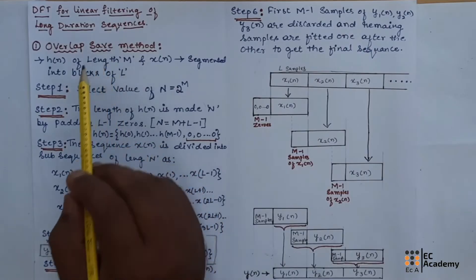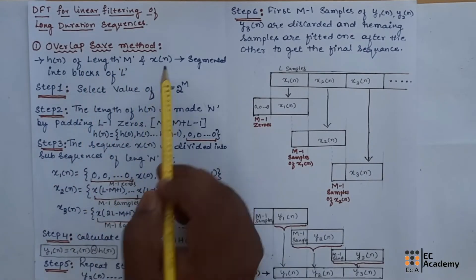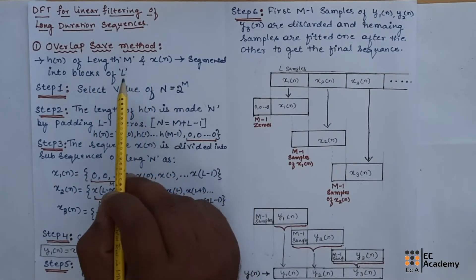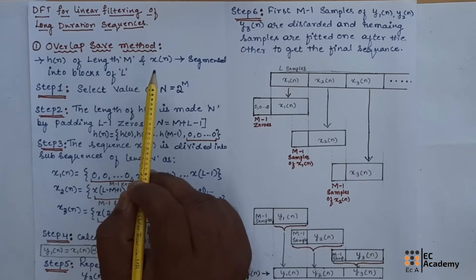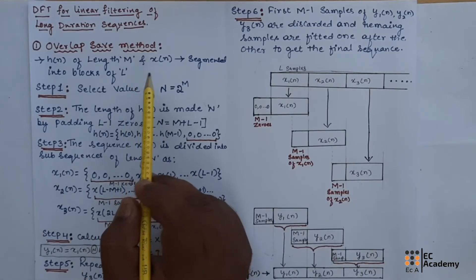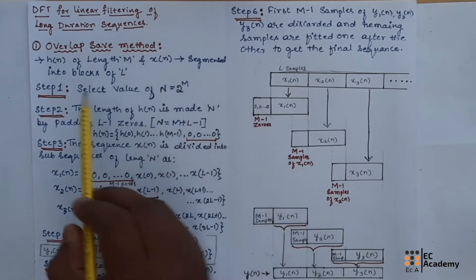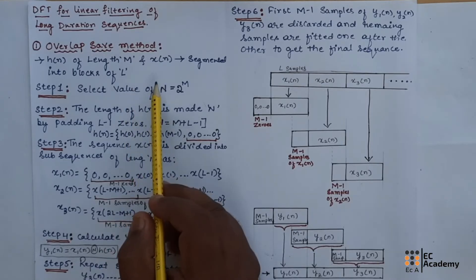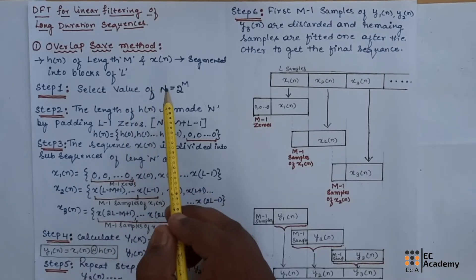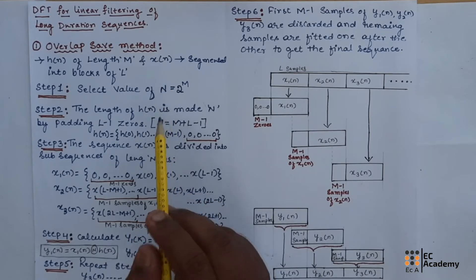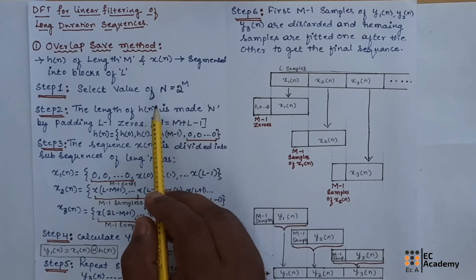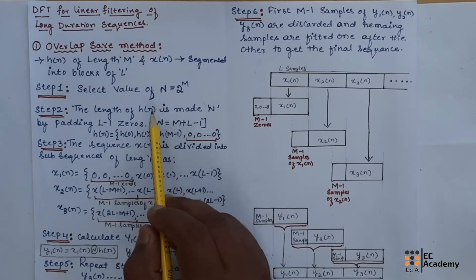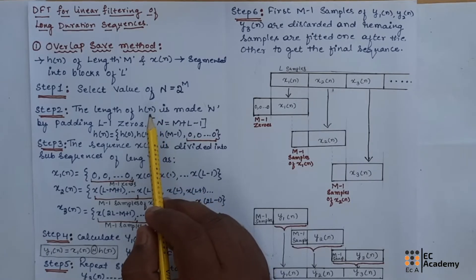In the previous lecture, we have seen that linear convolution can be implemented using DFT. Sometimes the input sequence x(n) is a very long duration sequence, hence to perform the convolution for long duration sequence it will be time consuming. Hence, the linear filtering of such long duration sequence can be implemented using DFT.